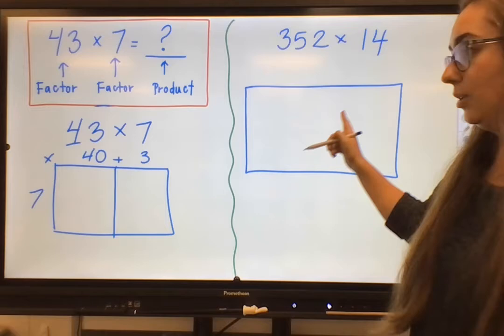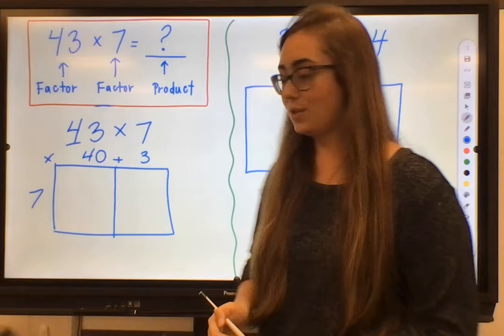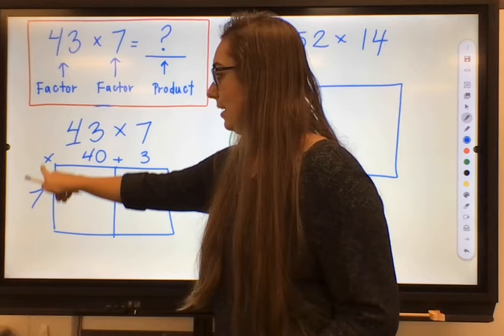You'll see on this problem over here when we get to two numbers with more than two digits, that I'll have more lines in this box. But currently, I've just got two sections. So now I'm going to look at this problem.